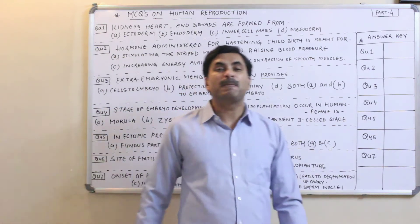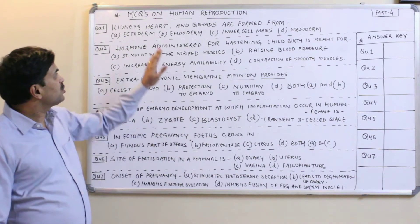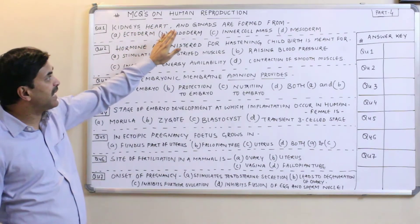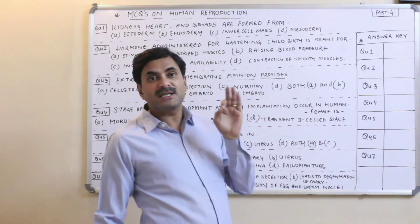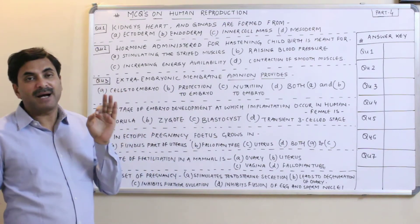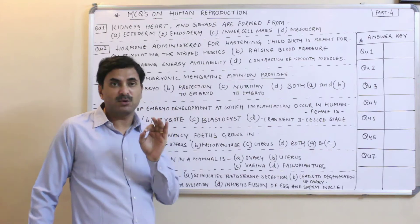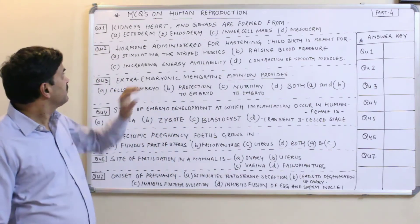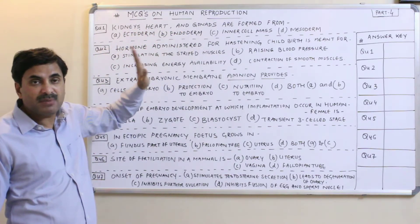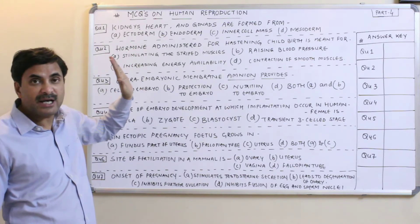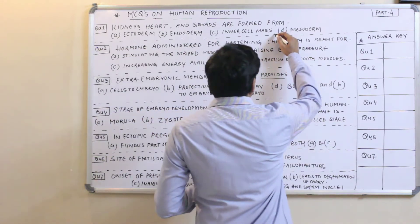Today we will discuss some important MCQs based on the human reproductive system. Question number one: kidneys, heart, and connective tissue are formed from which embryonic layer? We know that every organ is formed from one of the three embryonic layers: ectoderm, mesoderm, or endoderm. Kidneys, heart, and connective tissue are all formed from the mesoderm.